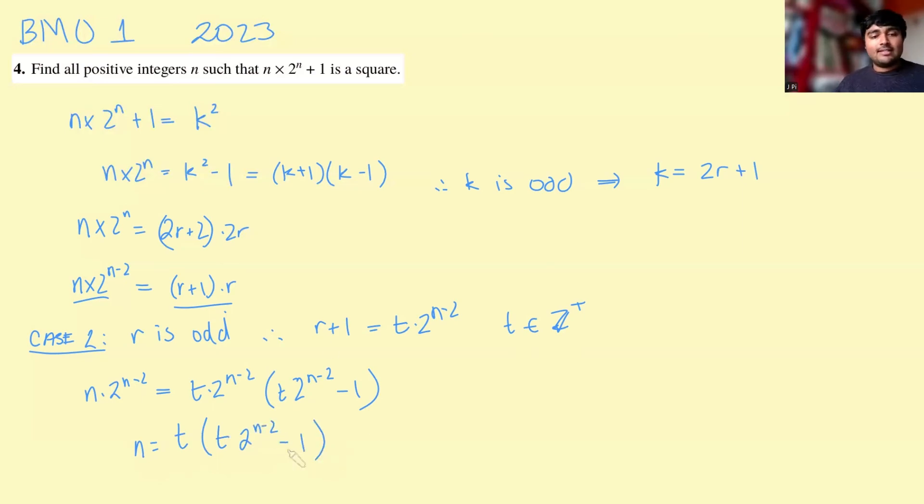And again, this is awfully similar to what we did before. The right hand side here is still an exponential function. The left hand side is linear. And so we know that, well, and again, we know that t is a positive integer, so this right hand side is at least 2 to the n minus 2 minus 1. So we're looking for when n is at least 2 to the n minus 2 minus 1, which won't be from very many values of n. And here, I guess, there's a little bit more flexibility because of the minus 1 here.